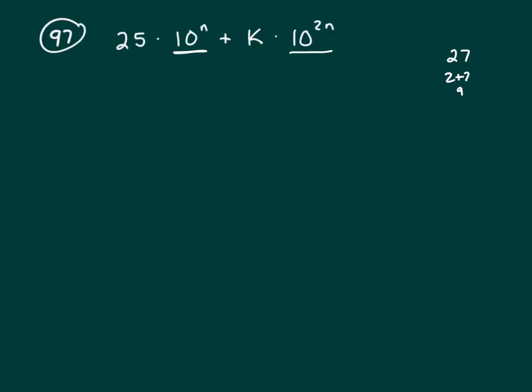So my number is going to have 25 in it for sure because 25 times 10 to the n is going to have a 25 and we need to figure out what K is. Let's use our answers.